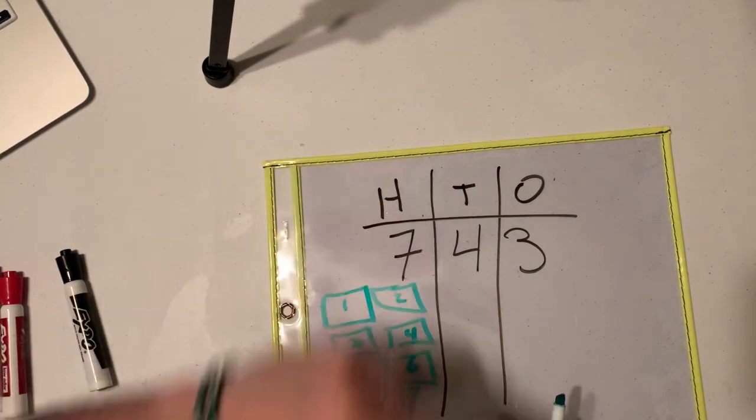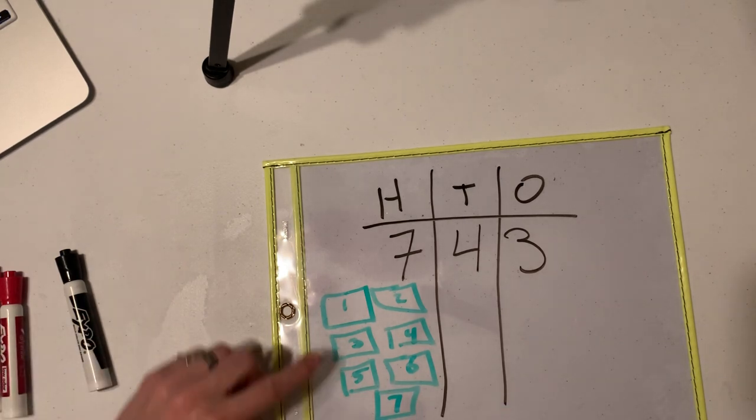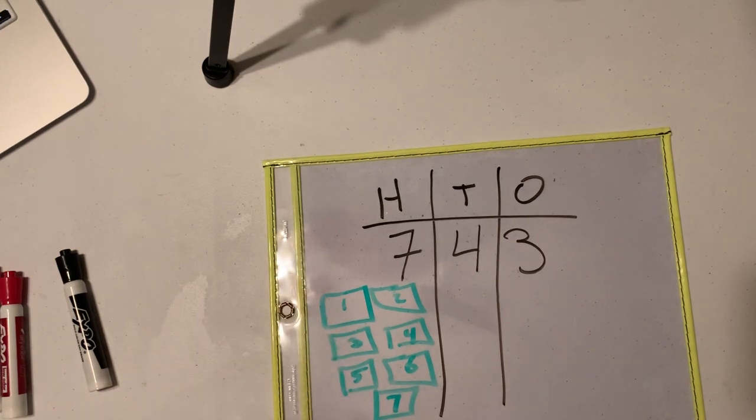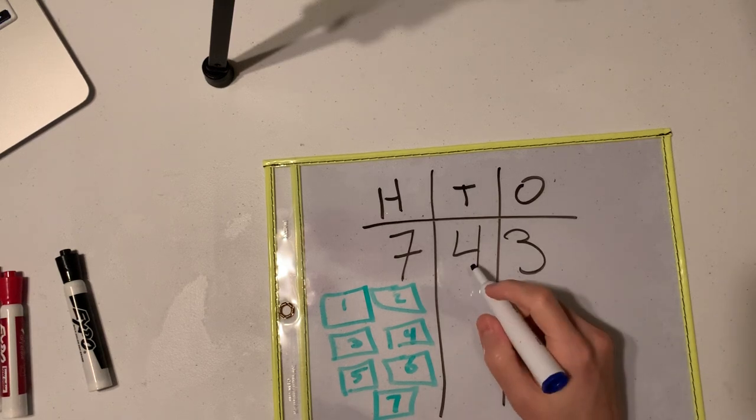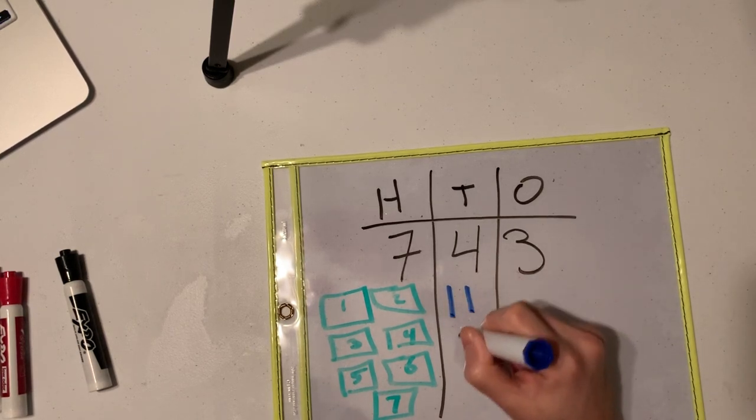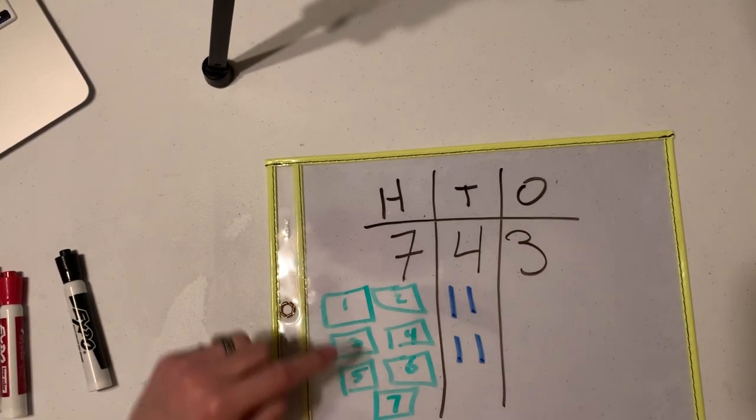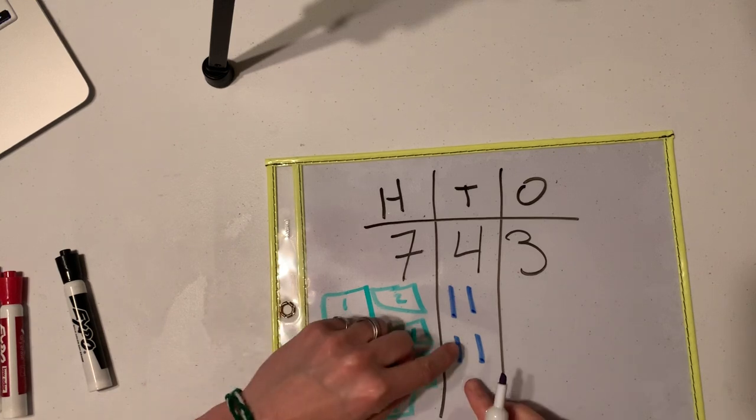Now, what's the value of the tens place? The value is four. So four tens equals 40. So I'm going to draw 40. Now, on the tens, we don't do big squares. We do lines because one line represents 10. So we need to draw four lines. We have one, two, three, four. Okay. So we have 740.